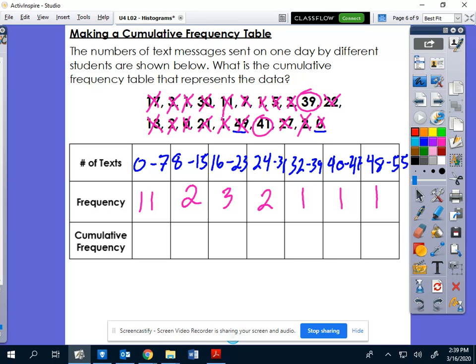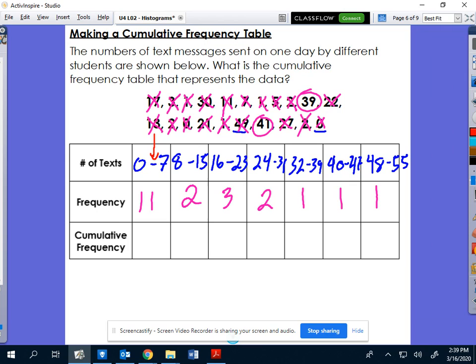So if we start out here in the very first column, how many people sent between 0 to 7 text messages? Well, 11 people did. That means our cumulative frequency is also 11. Pretty basic because that first interval is your very beginning, so it's 11 and below is just 11.